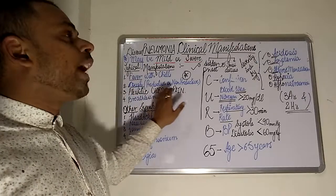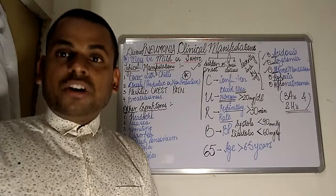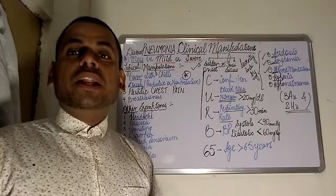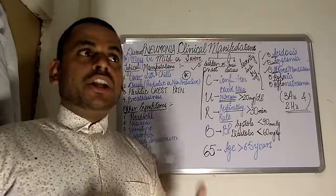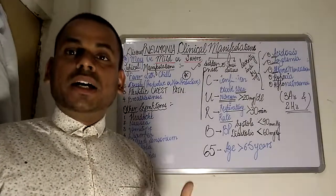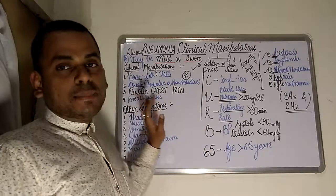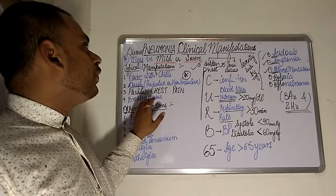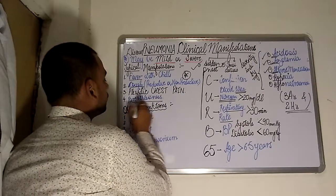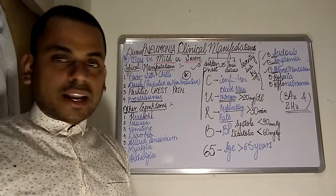The next hallmark clinical manifestation of pneumonia is pleuritic chest pain. Patients may complain of chest pain arising from the pleura — the soft surrounding layer covering the lungs. Moving on, breathlessness is also a key feature; the patient may complain of shortness of breath.